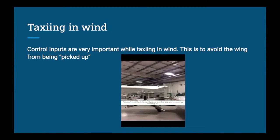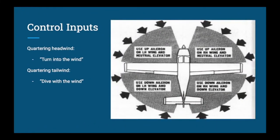The last part of taxiing is what we can do with the control yoke. It is possible for wind to pick the aircraft up — there's a picture here of a damaged wing where wind picked the aircraft up while parked and hit the wing off the ground. It's important to use proper taxi controls with the yoke to keep the airplane on the ground. This diagram is straight out of your flight training manual and shows yoke position relative to the wind. For a quartering front-left headwind, use up aileron on the left wing and neutral elevator — turn the yoke into the wind, to the left.